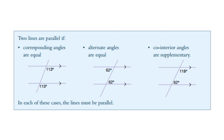For these angles to exist, the two lines need to be parallel. So if you can prove that there is a pair of corresponding angles, or a pair of alternate angles, or a pair of co-interior angles, then you have proven that the lines are parallel.